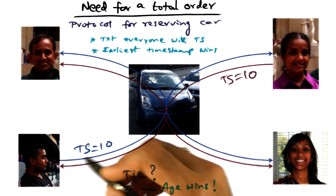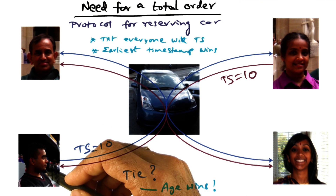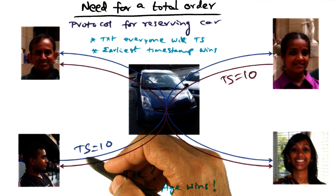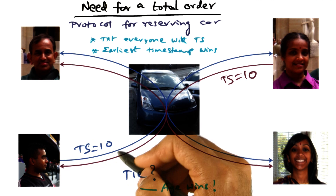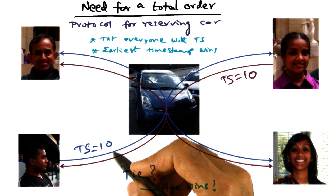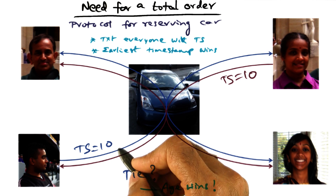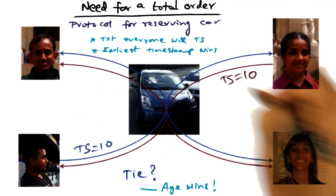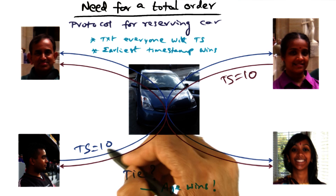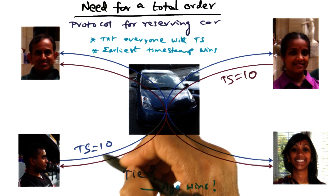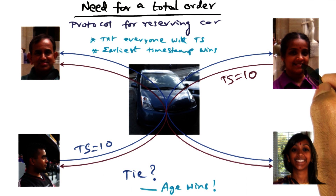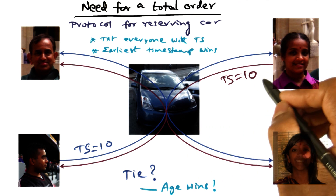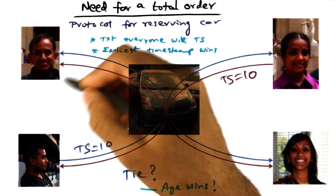But what if the timestamps, because these are locally generated by each one of us, happen to be the same? For instance, my son makes a request and sends a text message with timestamp 10 to all of us — that's the blue arrow going everywhere — indicating to all three of us that he wants the car. As it happens, my wife also makes a request for using the car with exactly the same timestamp 10, and that's the purple arrow.